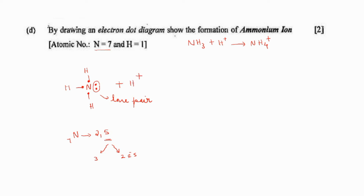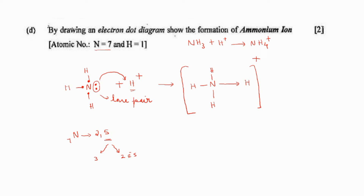When H⁺ ion approaches the ammonia molecule, it doesn't have any electron to form a bond. So these two electrons of the lone pair will be donated to H⁺ ion by the ammonia molecule, resulting in the formation of a coordinate bond. To draw the electron dot structure: first draw the structure of ammonium ion with pencil, then show the electrons of hydrogen using dot and the electrons of nitrogen using cross mark. The electrons in the coordinate bond were given by nitrogen, so both should be represented as crosses. After that, rub the bond in between. The electron dot structure of ammonium ion is ready.